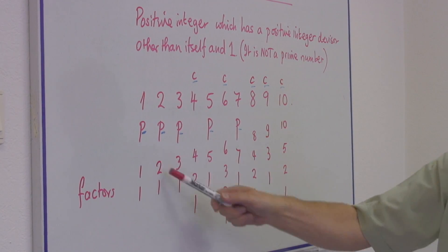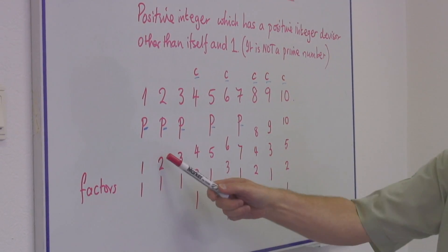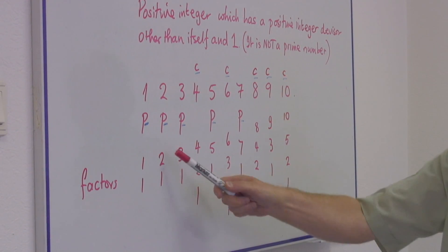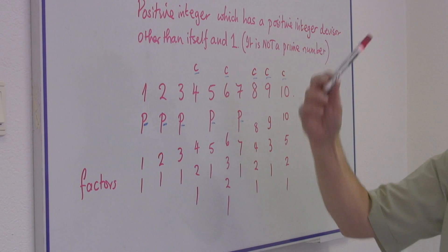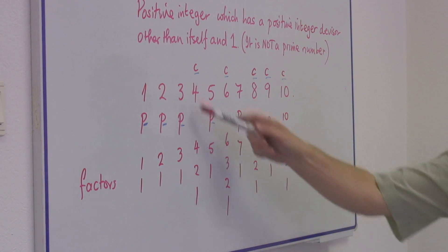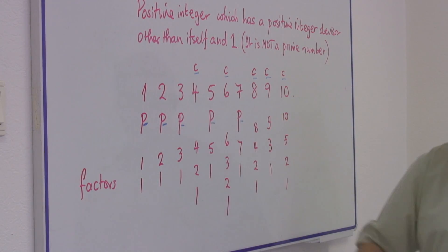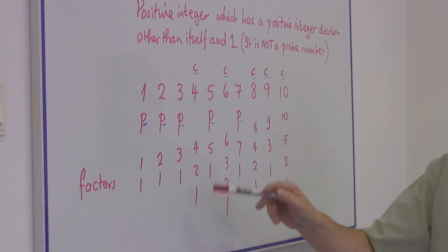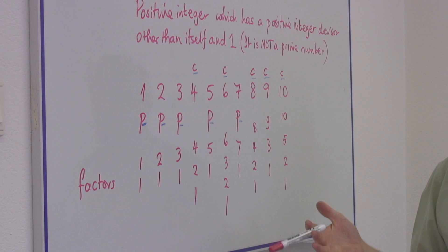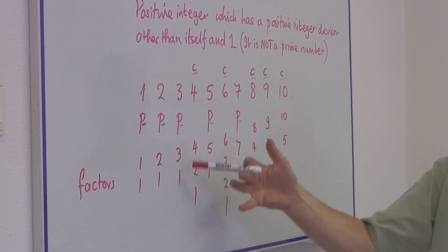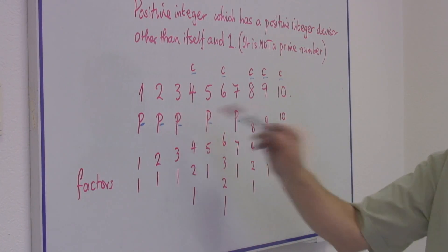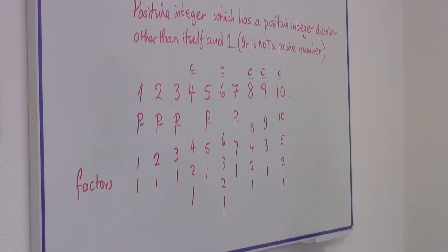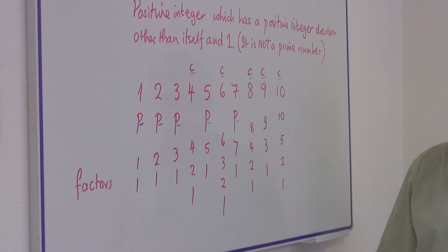The factors of two are two and one — two times one is two. The factors of three are three and one. There are no other whole number factors, and therefore all of those — one, two, and three — are prime numbers.